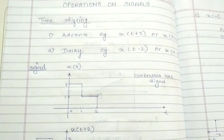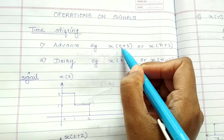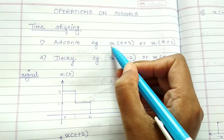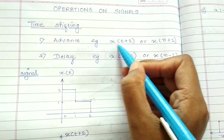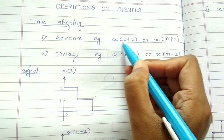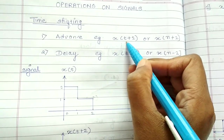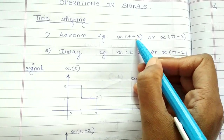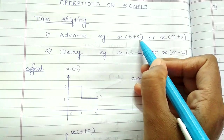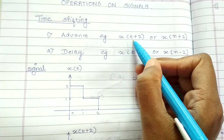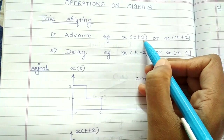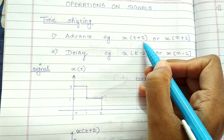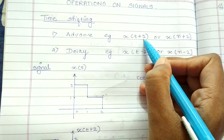An advance signal is an advanced version of X(t). So if the current signal is given as X(t), the advance signal will be given as X(t + n), where the integer n can be 1, 2, 3, 4, etc. So X(t+2), in this case, is an advanced signal of X(t), advanced by two units.